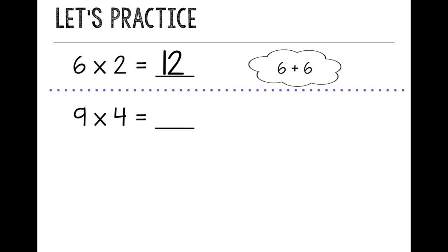Next, let's try 9 times 4. When I'm multiplying by 4, I double the other number, and then I double that again. So first I'm going to double 9. 9 plus 9. And I think in my head, I know that's 18.